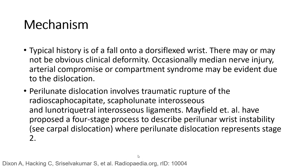Typical history is of a fall onto an outstretched hand in a young adult. There may or may not be obvious clinical deformity. Occasionally, median nerve injury, arterial compromise, or compartment symptoms may be evident due to the dislocation.